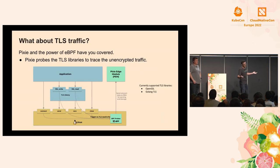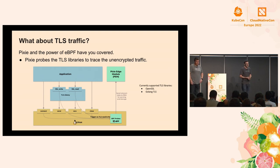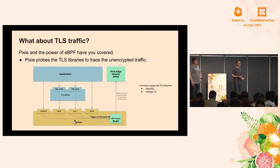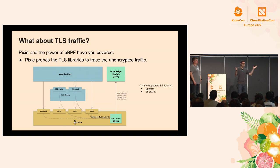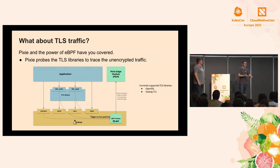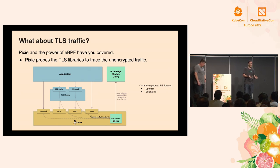Some of you might be thinking: my application is TLS-encrypted. By the time it reaches the kernel, it's all encrypted — how are you going to get the data? eBPF to the rescue again. When Pixie detects encrypted traffic, instead of probing the Linux kernel, it puts probes on the TLS library. For example, if you instrument OpenSSL and probe every time there's an SSL read or SSL write — essentially the equivalent of send and receive — all the traffic going through OpenSSL, regardless of which application it's coming from, OpenSSL being a shared library, we'll be able to get that traffic as well so we can replay it.